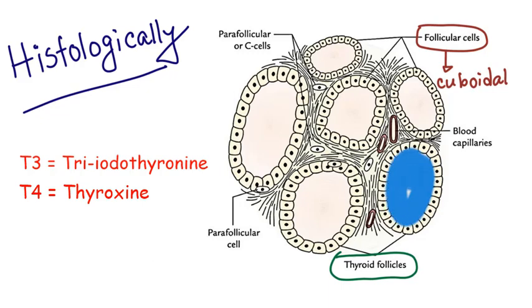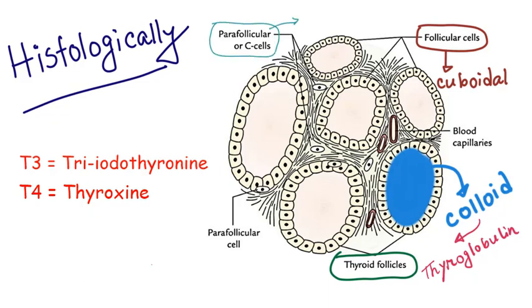Follicles are filled with secretory substance which is called colloid. Major constituent of colloid is thyroglobulin. It is a large glycoprotein molecule which contains the thyroid hormones. This gland also contains C-cells or parafollicular cells in between the follicles. They secrete calcitonin.